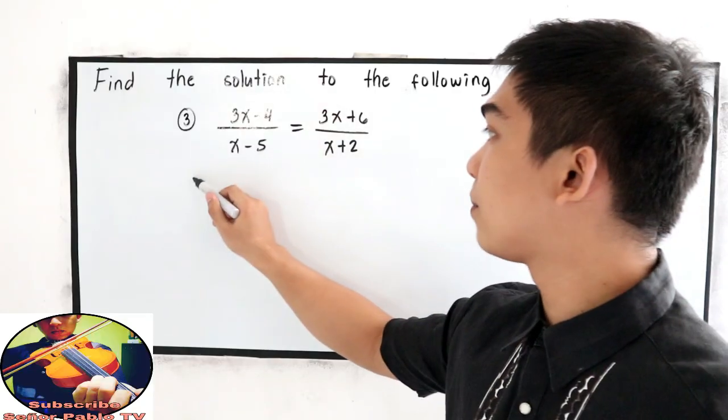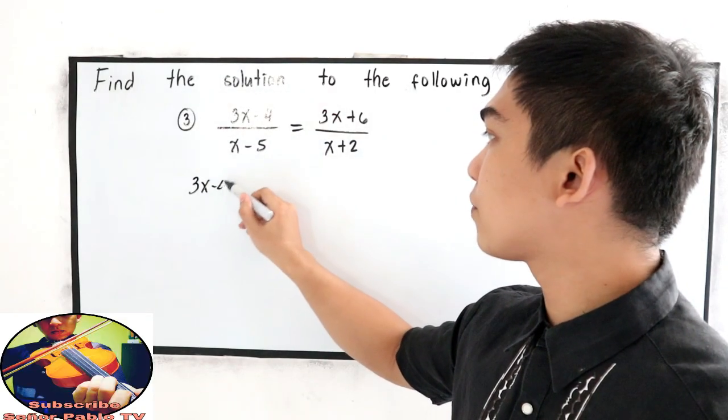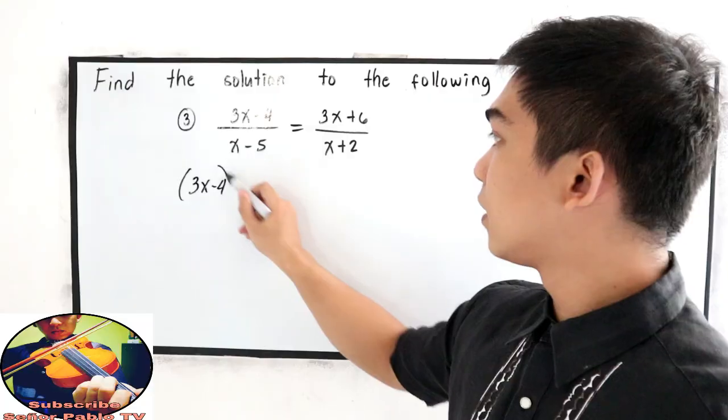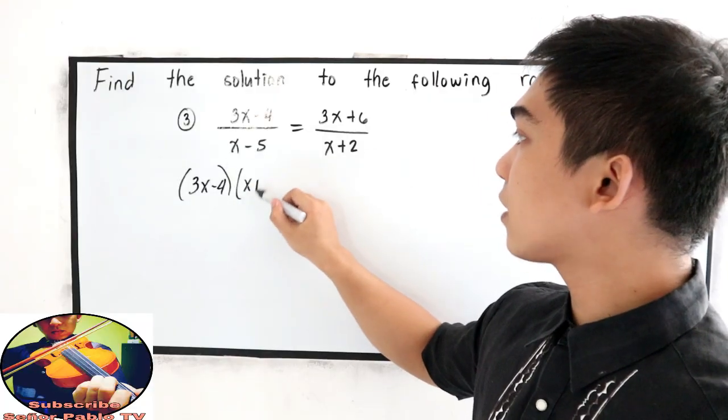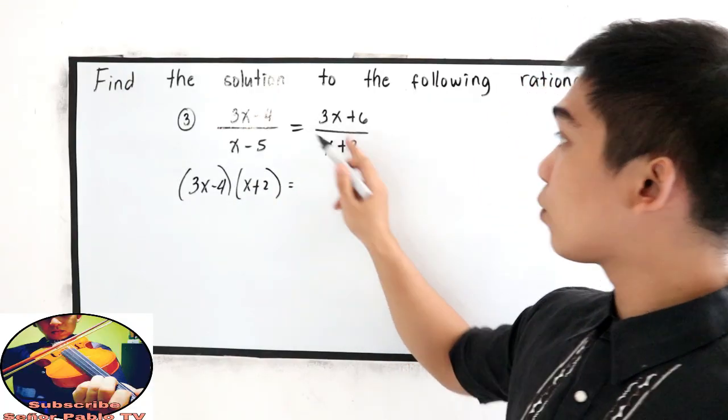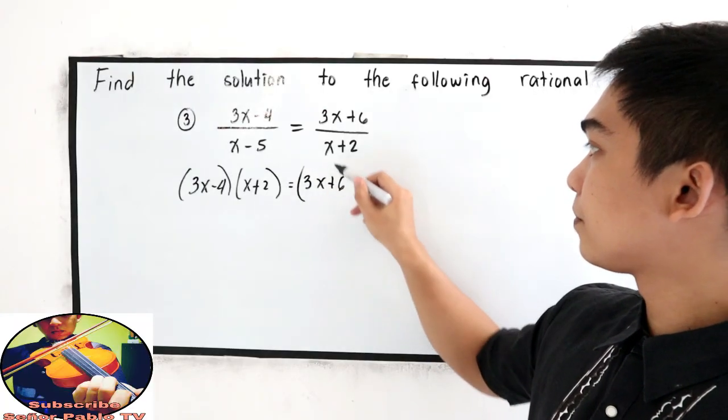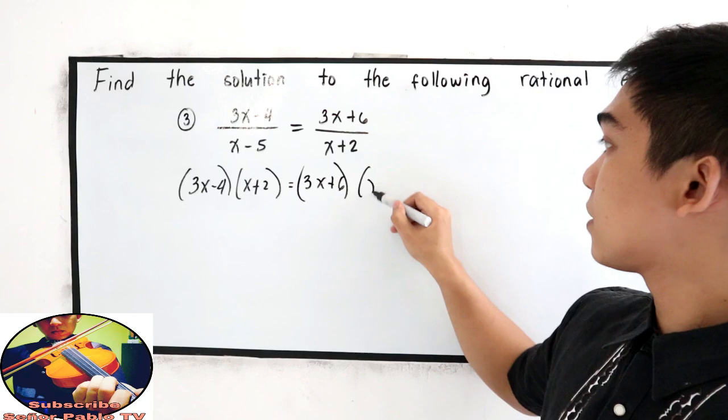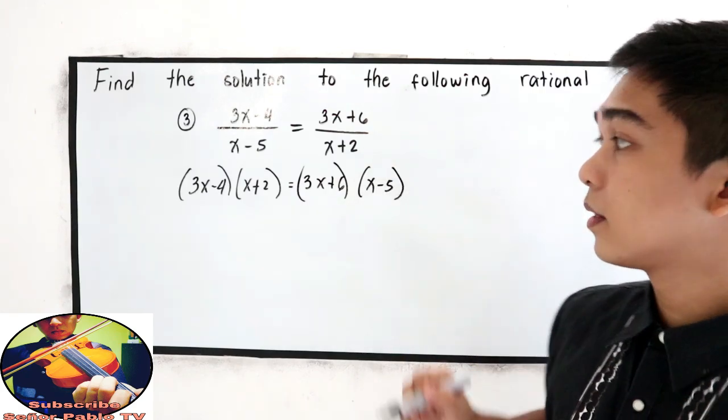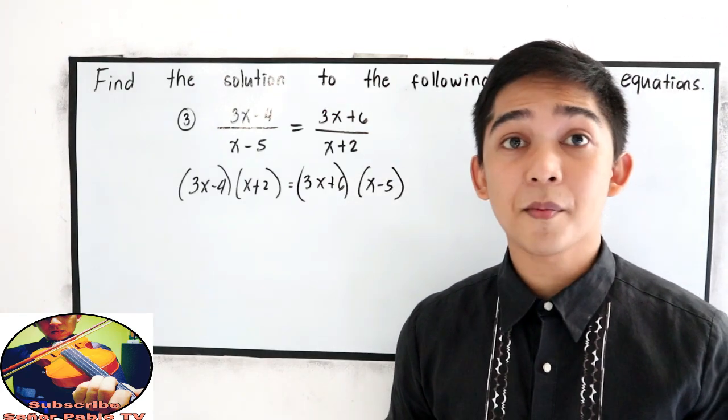So cross multiply, that will become 3x minus 4 times x plus 2 is equal to 3x plus 6 times x minus 5. Then, use the FOIL method.